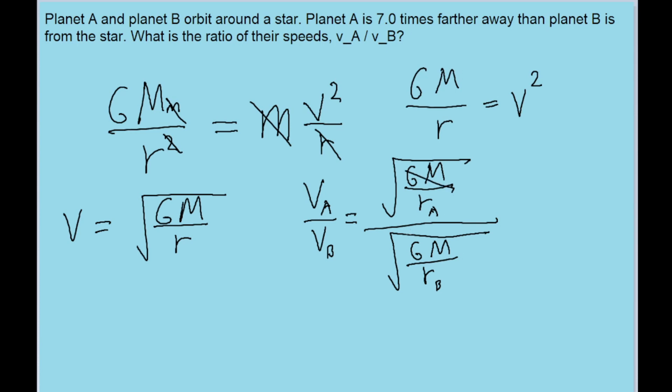we can immediately cancel out GM, since the GM is in both the numerator and the denominator, and they can cancel out pretty easily.